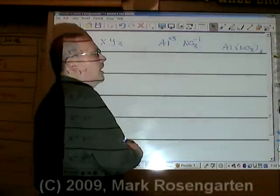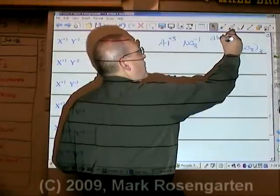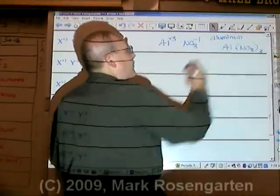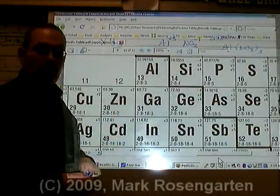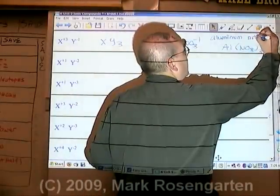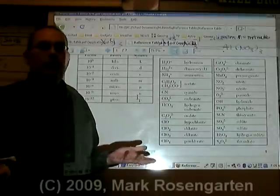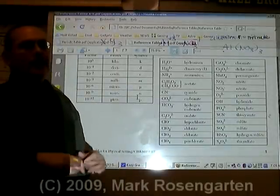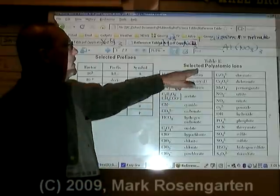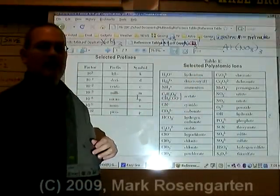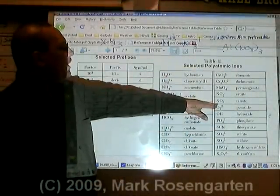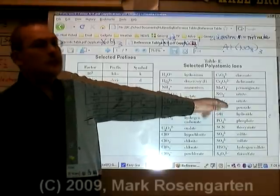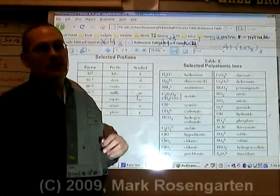The name of this compound is aluminum. Now, aluminum only has one charge listed, so you don't need to put a Roman numeral. Nitrate. Now, I wrote phosphate, I wrote nitrate. Where do I get the name of nitrate from? Reference table E, selected polyatomic ions, has all of your polyatomic ions in it. Here's the nitrate ion. NO₃ minus, minus one, is nitrate.